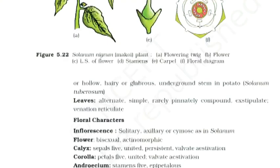Floral Formula: Actinomorphic, bisexual, Calyx 5 united, Corolla 5 united, Androecium 5 epipetalous, Gynoecium with superior ovary. Economic Importance: Many plants of this family are sources of food — tomato, brinjal, potato; spice — chili; medicine — belladonna, ashwagandha; fumigatory — tobacco; ornamentals — petunia.